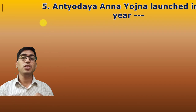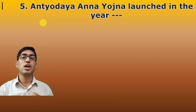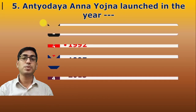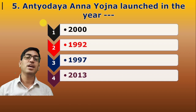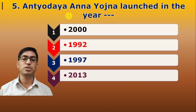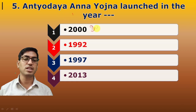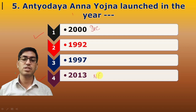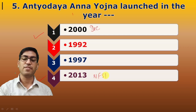Fifth question: Antyodaya Anna Yojana was launched in the year — and the answer is 2000, specifically December 2000. Note that 2013 refers to the National Food Security Act, not Antyodaya Anna Yojana.